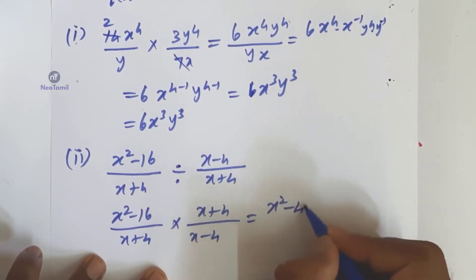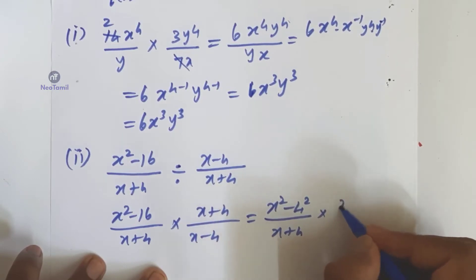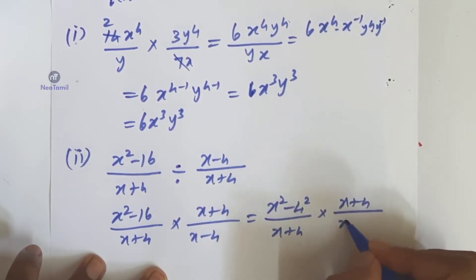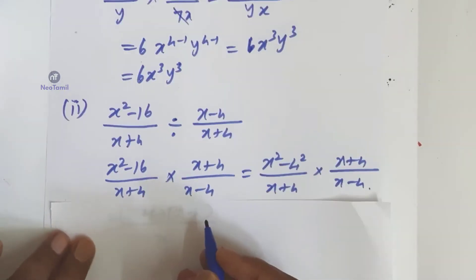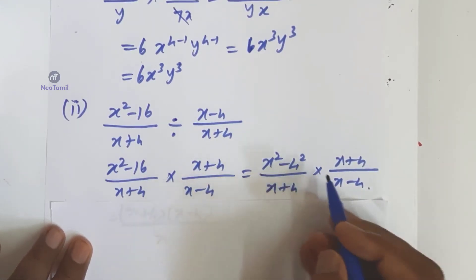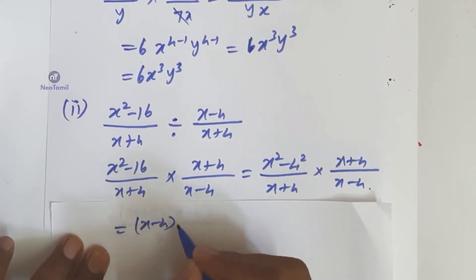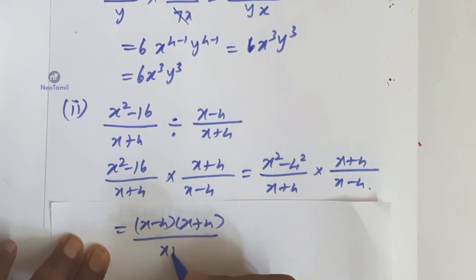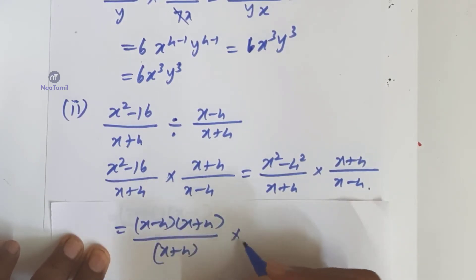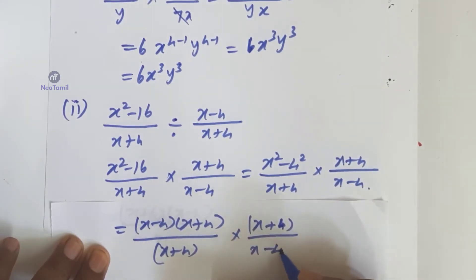We have x squared minus 16 divided by x plus 4, multiplied by x plus 4 divided by x minus 4. Applying the a squared minus b squared formula, that is a plus b into a minus b: x squared minus 16 becomes x plus 4 into x minus 4, divided by x plus 4, then multiplied by x plus 4 divided by x minus 4.